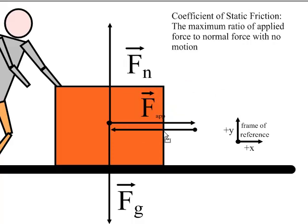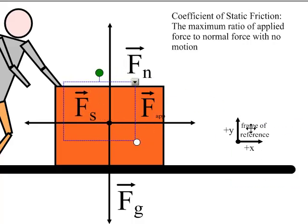So the coefficient of static friction comes at that place just before the object starts to move. Static force. The object is just starting to move. And that's where we get our coefficient of static friction.